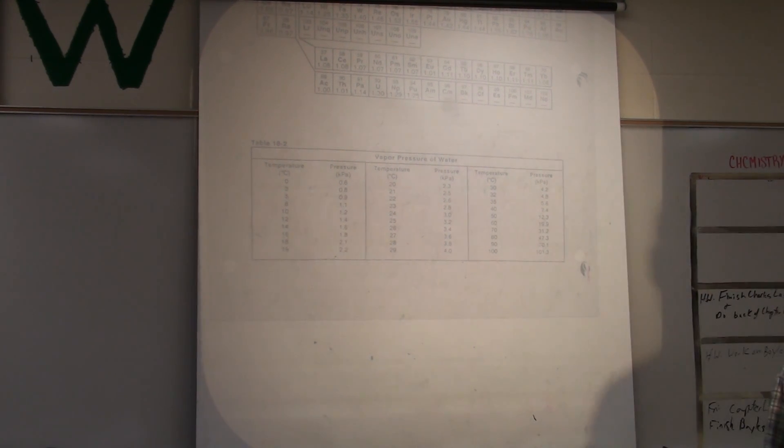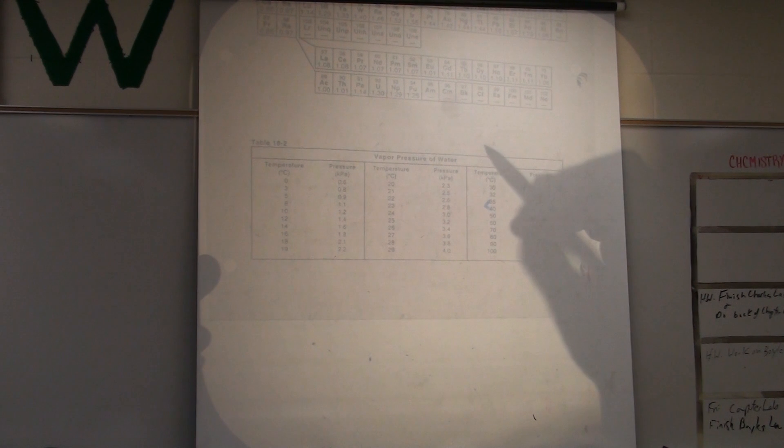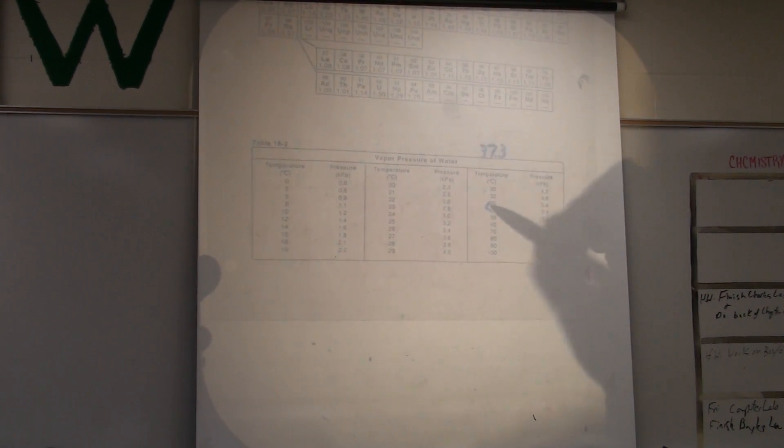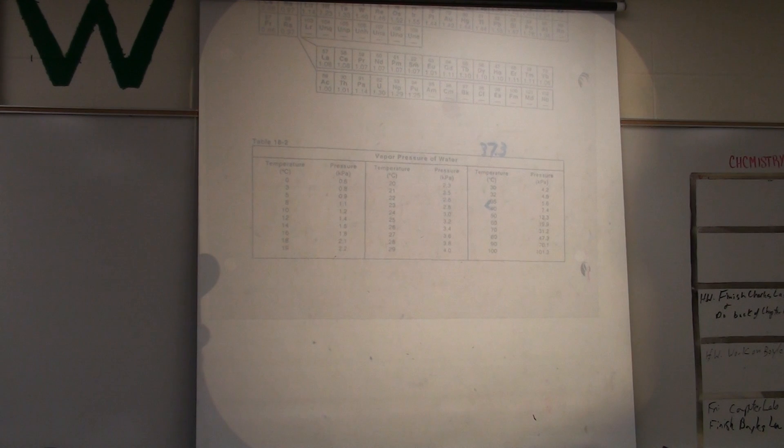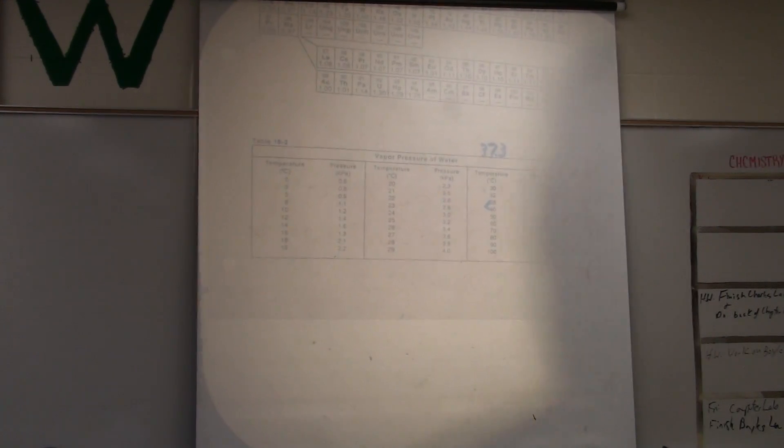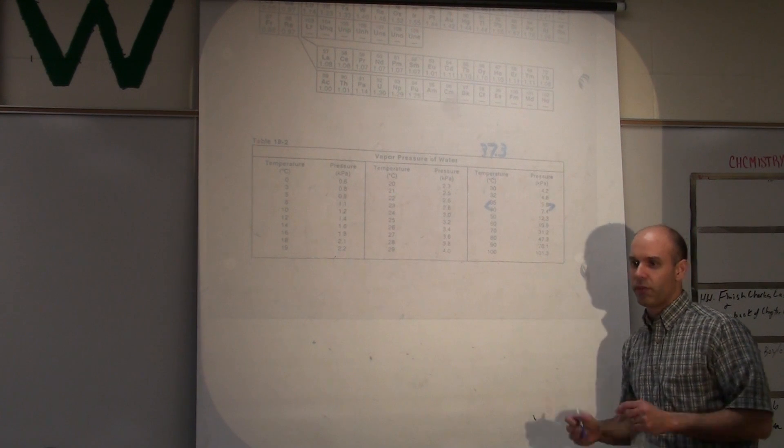So, what we're going to do is we are going to interpolate, meaning go between. So, 37.3 is in between those two values, between 35 and 40. And so, the vapor pressure is going to be between those two values, 5.6 and 7.4.